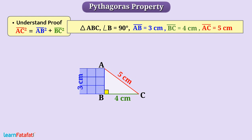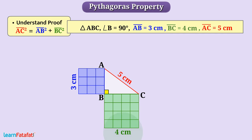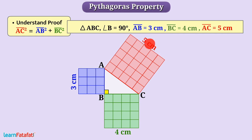We can draw a square of side 3 cm on AB, a square of side 4 cm on side BC, and a square of side 5 cm on hypotenuse AC of this triangle, as shown in the figure.